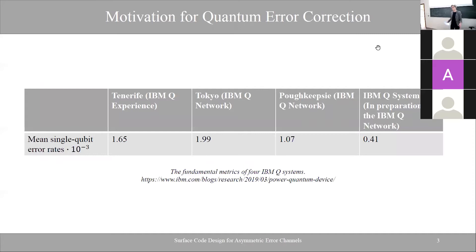First, a brief motivation for quantum error correction. Here are some metrics from IBM quantum computing systems with mean single qubit error rates. For comparison, what is considered a good quantum computer nowadays would have error rates of 10 to the power of minus 3, while to achieve large-scale utilization of quantum computing we would need 10 to the minus 14, so that we can utilize algorithms like Shor's algorithm on actually large numbers. There is a new system which has half of that error rate, which is much better but still not enough for large-scale systems.